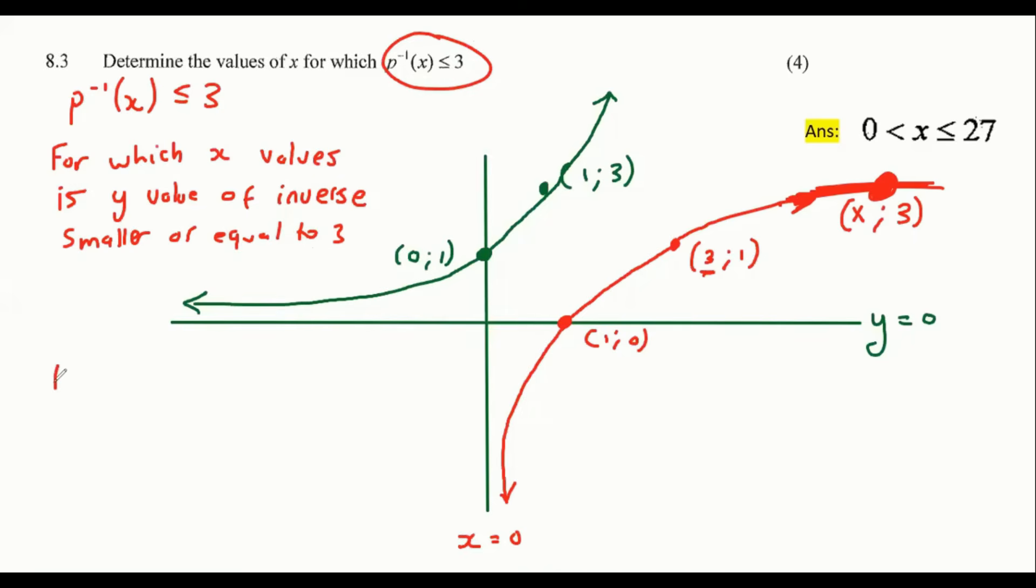We can do that by just taking its equation. We let the Y value equal three. And then we solve for X. Now, depending on how good you are with logs, you should realize that to find X, you're going to say three to the power of three. And so X will be equal to 27. So that means that the X value at this point is 27.